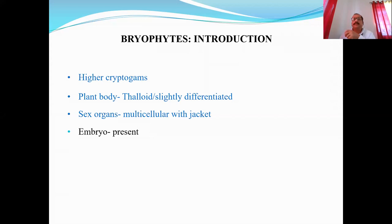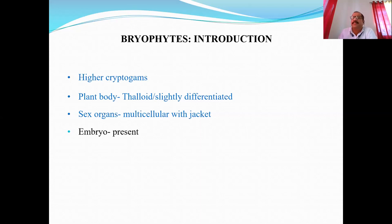What are bryophytes? When we consider algae, the first thing that comes to mind is their aquatic habitat. When we consider higher plants like spermatophytes, gymnosperms, angiosperms, or pteridophytes, these are terrestrial plants. Plants can grow in two extreme habitats: in water and on land. Those growing in water are called aquatic plants, whereas those growing on land or soil are known as terrestrial plants.